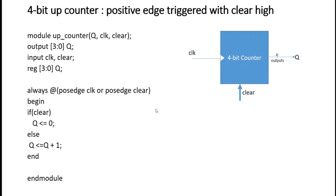Now suppose instead of a 4-bit up counter you need an 8-bit up counter. The only change needed is to update the vector size — replace the index 3 with 7 in both the output declaration and the register declaration. By changing the size of the vector you can design a counter of any size.